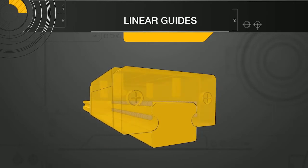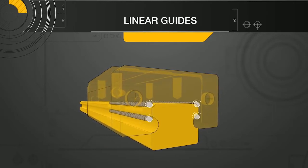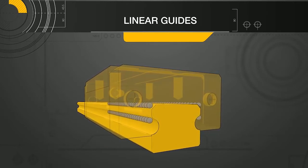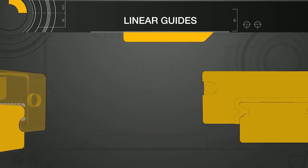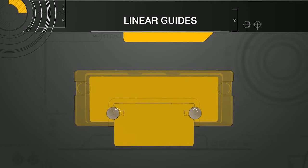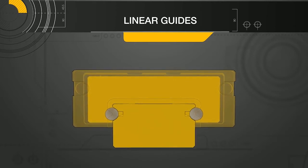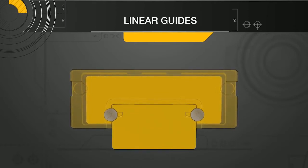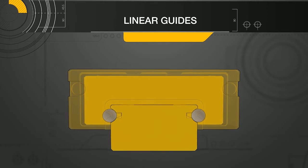When using two-point contact, four raceways or ball paths are required to handle loading in all directions. In contrast, gothic arch four-point contact only requires two raceways. This allows for a more compact linear guide and can be less expensive to manufacture.